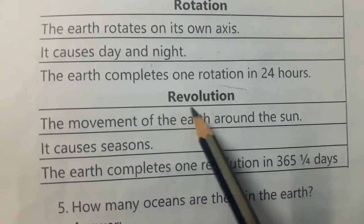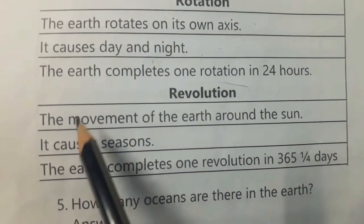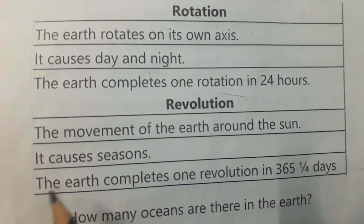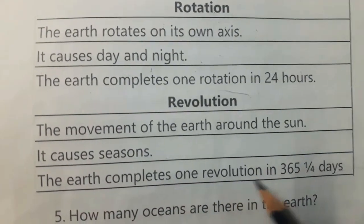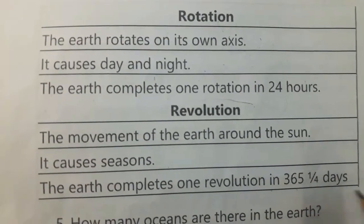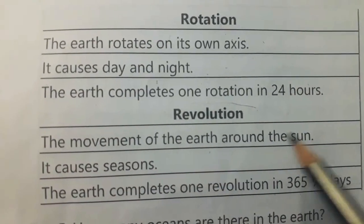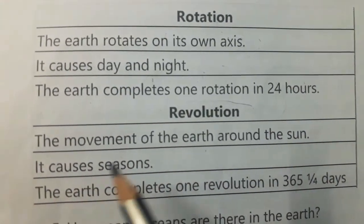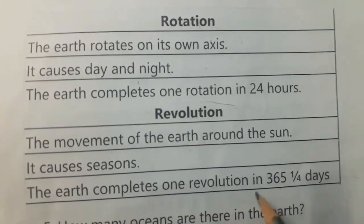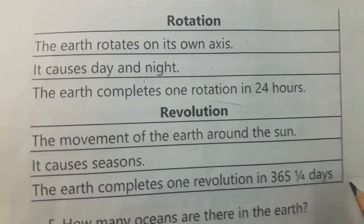Revolution: The movement of the Earth around the sun. It causes seasons. The Earth completes one revolution in 365 and one-quarter days.